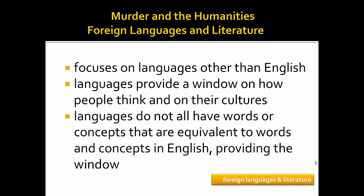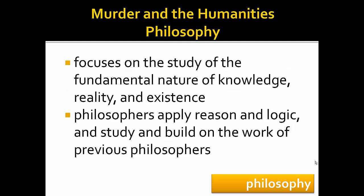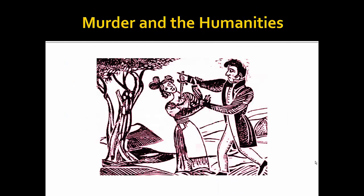In English, the word murder includes intent, but words that distinguish intentional murder from accidental killing do not necessarily exist in every language or culture. Historians ask questions about the past by looking at documents and other artifacts created in the past to determine what happened and how people perceived events in that time period. Historians interested in murder could collect and analyze written records by high-level Nazi officials in order to research the historical phenomenon we understand as the Holocaust. In philosophy, researchers investigate the fundamental nature of knowledge, reality, and existence. Applying logic and reason, they build on the work of earlier philosophers. A philosopher interested in murder might investigate the history of ethics in state-managed capital punishment. Overall, the humanities faculty focus on human perspectives and individual accounts of murder.